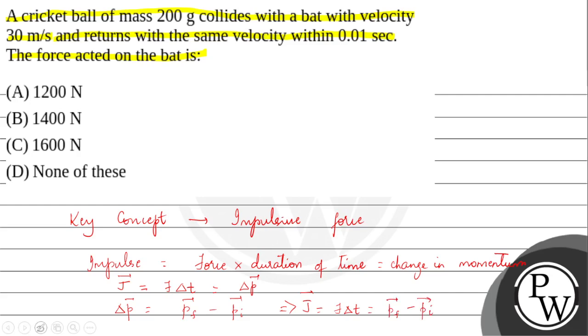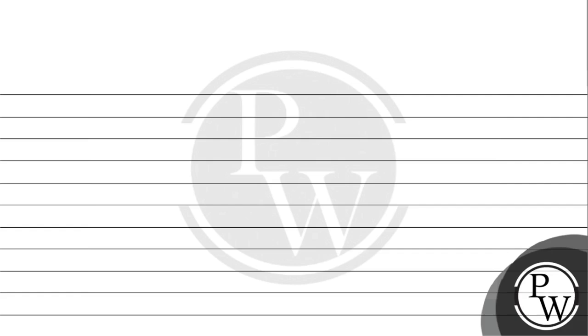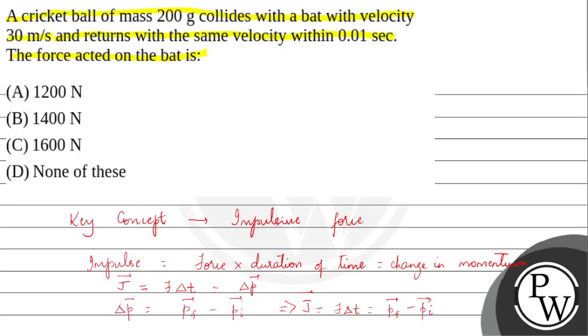To solve this question, we will first note down the data given in the question. Given: mass of the cricket ball m is equal to 200 grams.